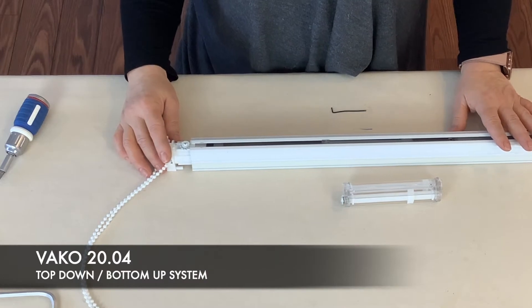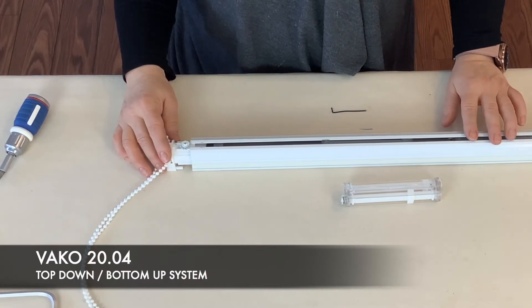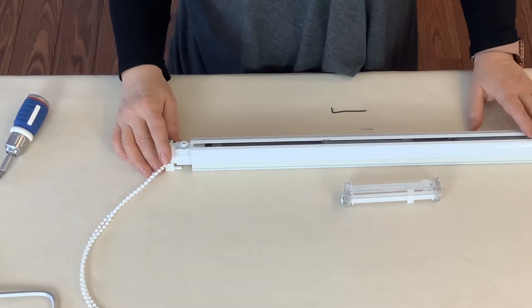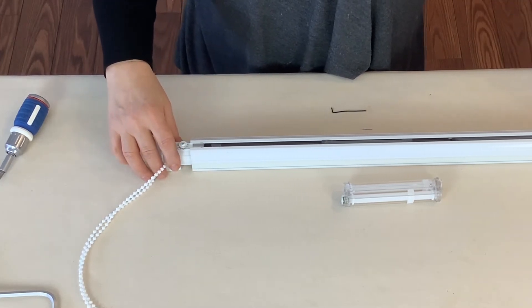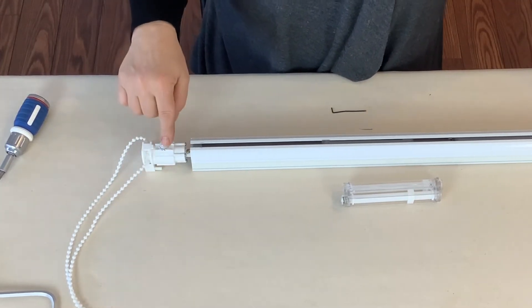Hello, in this video I would like to show you how to reset the top-down bottom-up system if you ever have to do that. There's an easy way, don't worry about it. What you have to do is untighten the screws of the clutches.